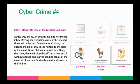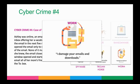Cyber crime case number four: the case of the messed up emails. Ashley was online when an email came into her mom's inbox offering a vacation cruise if she opened it within five minutes. She opened the email only to see hundreds of copies of it — none of it made sense. The email then closed itself, and a new email window opened and started sending copies to all of her mom's friends' email addresses. That's a worm — they damage emails and downloads, and copy themselves repeatedly. Once Ashley clicked on that email, it regenerated itself over and over, then took over her email and sent emails out as if they were coming from her. That's actually how friends, families, and co-workers get infected by malware quite often.